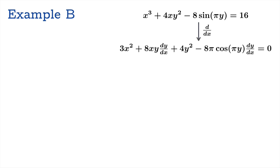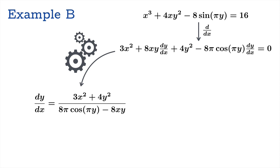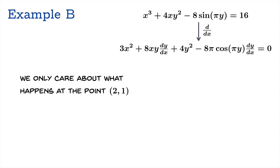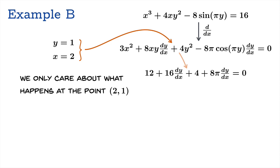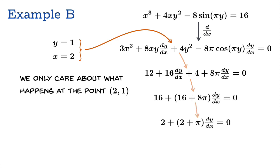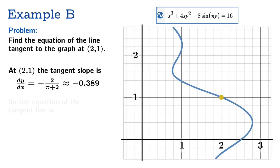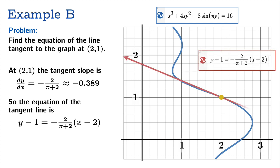After applying implicit differentiation, we could solve algebraically for dy/dx in terms of x and y. But since we only care about the point (2, 1), we substitute x = 2, y = 1 immediately. This simplifies the equation considerably, and we find dy/dx = −2 / (π + 2). Using the point-slope formula, we can write the equation of the tangent line and verify it in Desmos — and it looks exactly right.